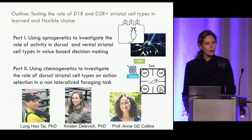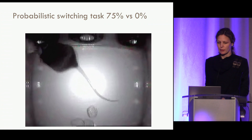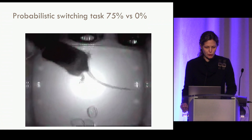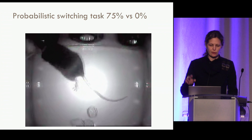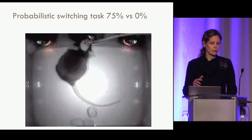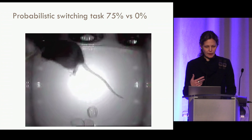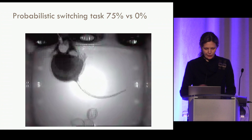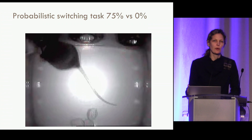Part one uses a task we call the probabilistic switching task — others call it a two-armed bandit for rodents. There are no cues; the animal is self-initiating and remembering what it encountered. When it pokes into the center, lights come on indicating a good poke and telling it to choose left or right. In a left-rewarded block, the animal gets water 75% of the time choosing left. After 8 to 23 rewards the rewarded side switches, staggered so the animal can't anticipate it. Twenty-five percent of the time it doesn't get water even choosing the correct port.